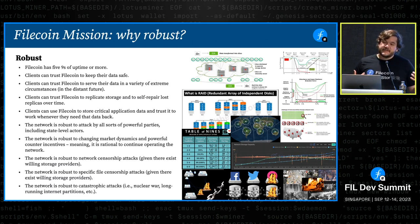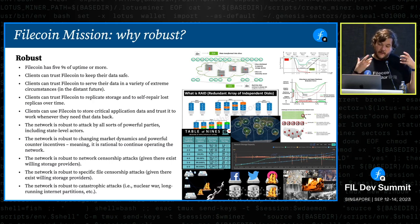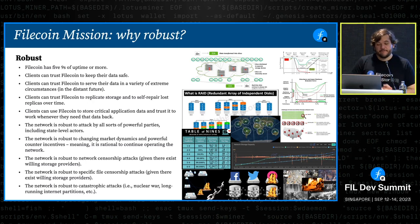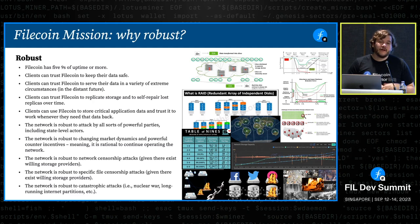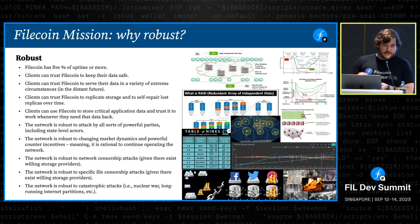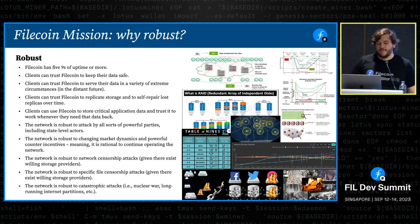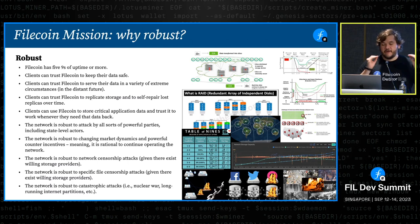Robustness also means that clients should be able to trust the network to keep their data safe. If they add their data to the network, as long as the economics work out and there's a rational incentive to keep their data, those clients should be able to trust the network. They should also be able to trust Filecoin to serve that data in extreme circumstances in the distant future. Ideally, it would be great to build a utility that functions like physical materials — like paper, you write something and leave it somewhere, and somebody else might discover it later. Digital storage, for the most part, doesn't work like that today — it tends to disappear very quickly.